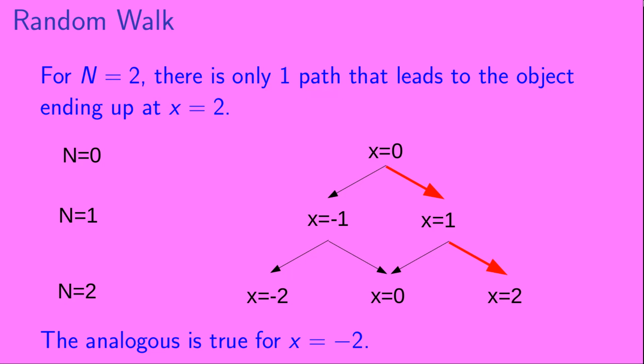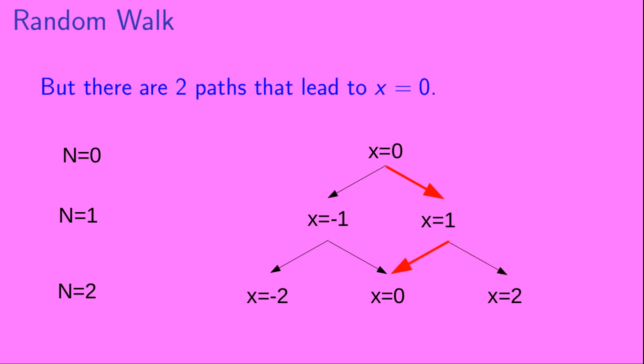For n equals two, there is only one path that leads to the object ending up at x equals two — the object must go to the right toward positive x on both the first and second step. The analogous is true for the object arriving at x equals minus two. However, there are two paths that lead to x equals zero: the object can go to the right and then to the left, or it can go to the left and then to the right.